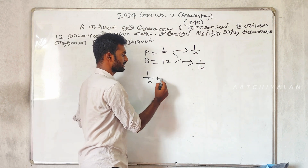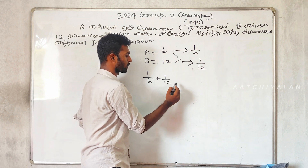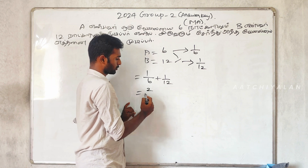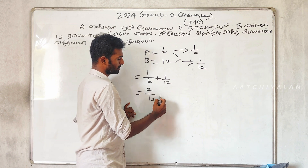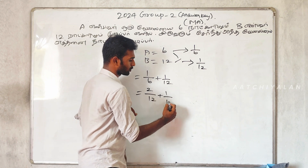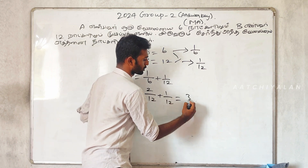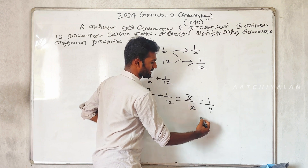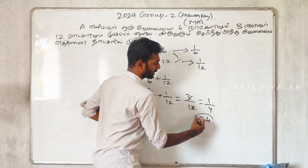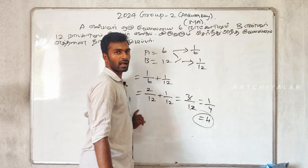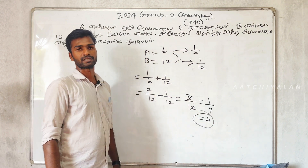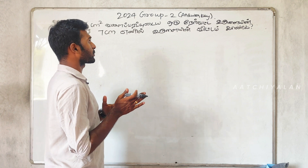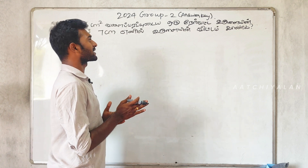1 by 6 plus 1 by 12. So 2 by 12 plus 1 by 12 equals 3 by 12. If we cancel this, it's 1 by 4. If we reverse this, 4 by 4.